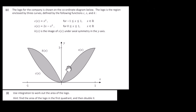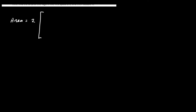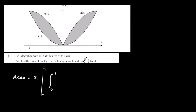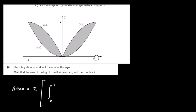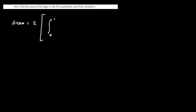We find the area underneath the curve S of X, which includes the white area as well, then subtract the area underneath C of X — that white area — to get the shaded region. So the area equals twice the integral from 0 to 1 of (2X minus X squared) dx, minus the integral from 0 to 1 of X squared dx.